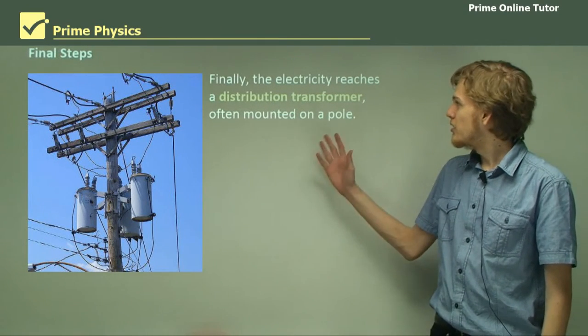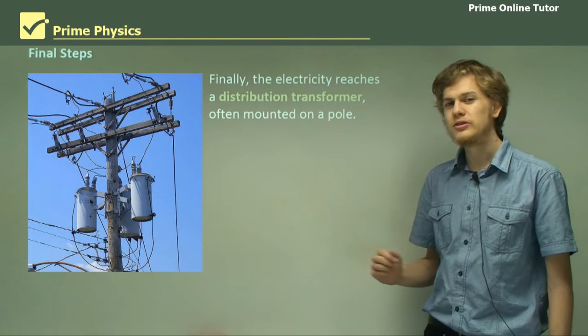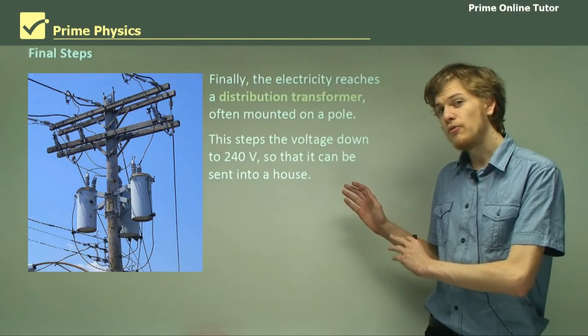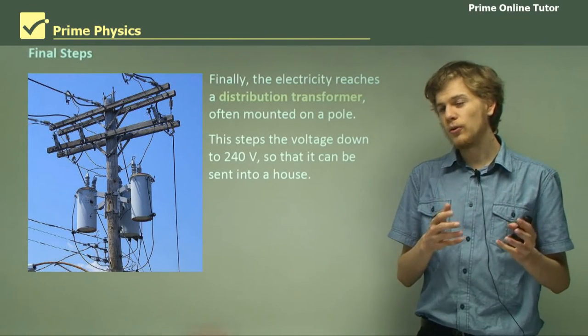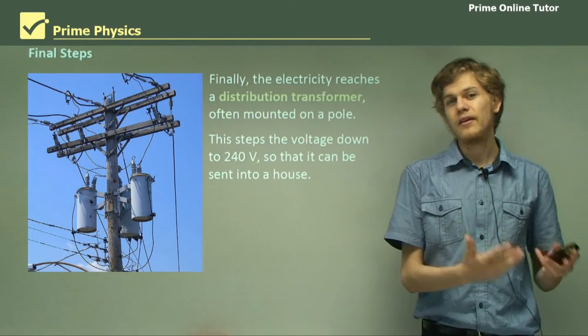Finally, the electricity reaches a distribution transformer which is often mounted on a pole like we can see in the photograph. So this will step the voltage down from the 11 kilovolts down to a much more manageable 240 volts which is then sent into the house.